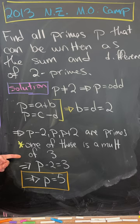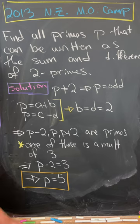But then that means that one of them is a multiple of 3. It must be the smallest, thus p is equal to 5.